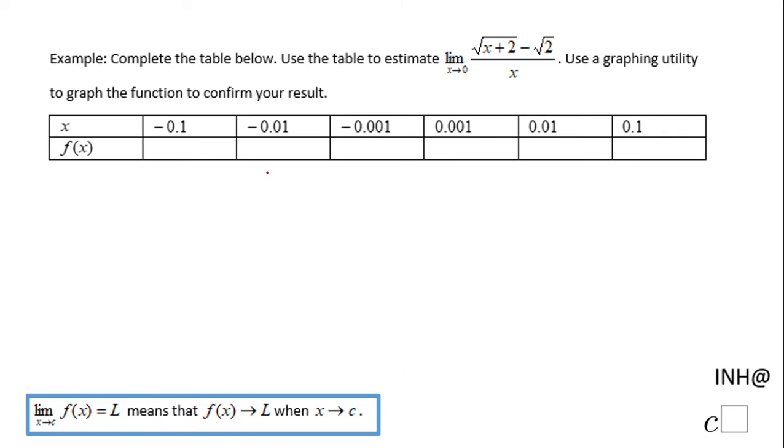Welcome or welcome back to C-square. In this example we need to find this limit: limit when x approaches 0 of square root of x plus 2 minus square root of 2, all over x.